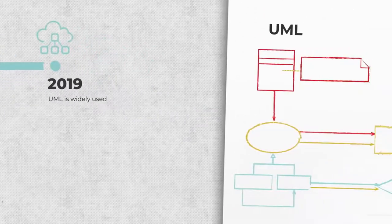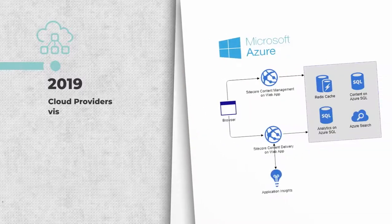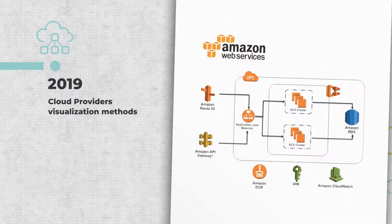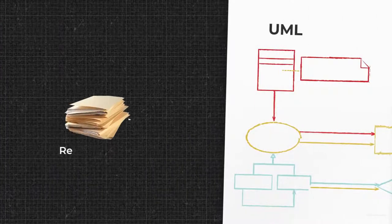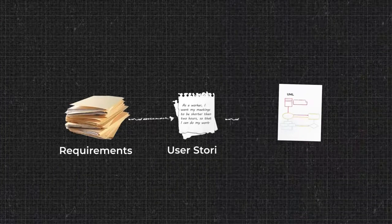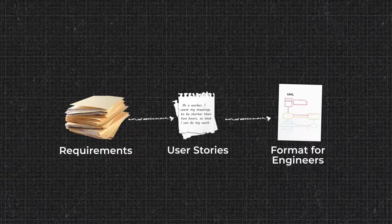UML isn't the only way to describe architectures. With the growth of cloud services, their providers also suggest their own individual visualization methods. And that's how business needs are first translated into user stories, and then into the format that engineers can work with.